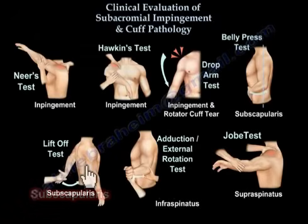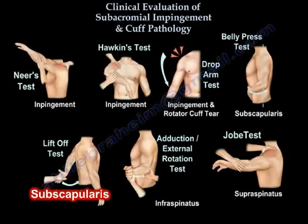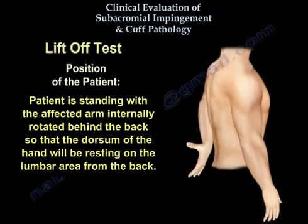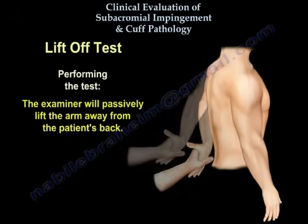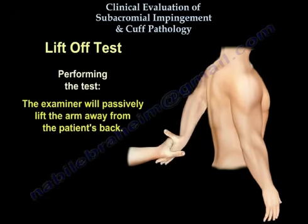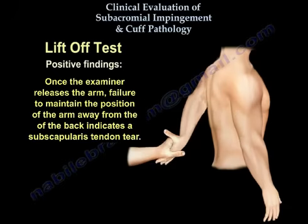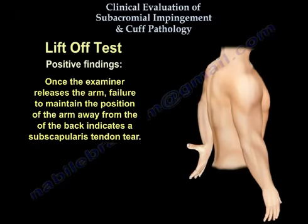Lift-off test for subscapularis integrity. The patient is standing with the affected arm internally rotated behind the back, so that the dorsum of the hand will be resting on the lumbar area from the back. The examiner will passively lift the arm away from the patient's back. Once the examiner releases the arm, failure to maintain the position of the arm away from the back indicates a subscapularis tendon tear.